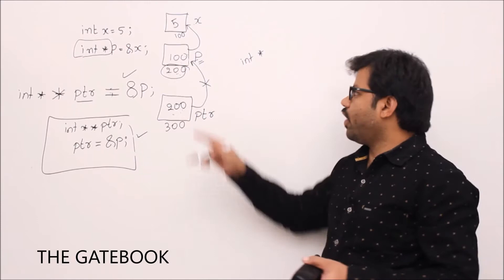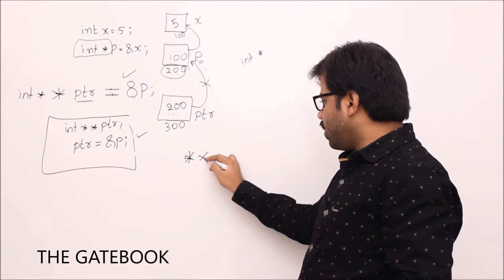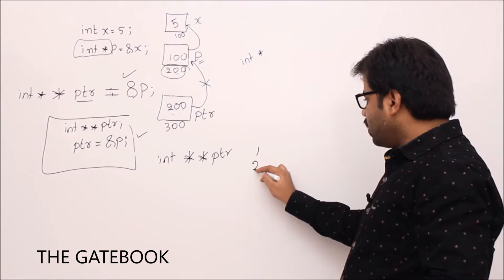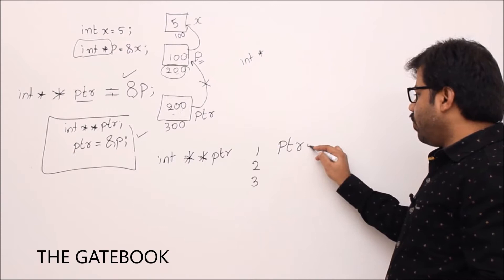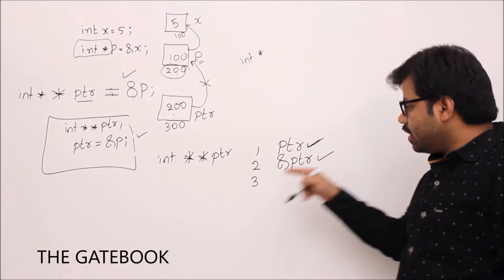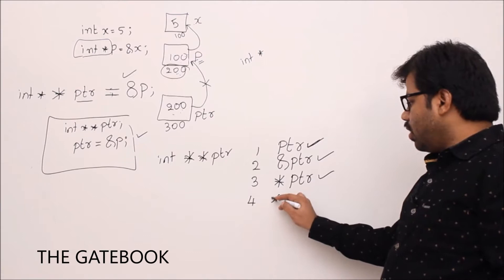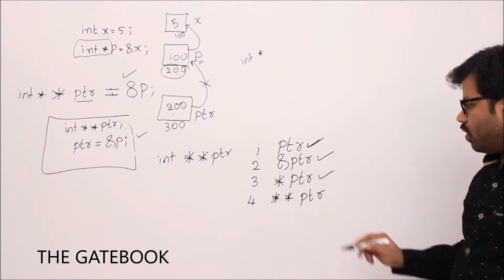In that way we can create a double pointer. The purpose of a double pointer is to modify a single pointer. Of course we can also modify x — I will tell you. Before that, please learn some properties of the double pointer. Whenever you have a double pointer like this, there are various syntax you can use. First: as usual, every variable can be referred with its variable name ptr. Second: you can also refer to the address of that box — that's why address of ptr is valid. Since it is a pointer, dereferencing is possible — star ptr is the third valid thing. There is one more: double star ptr.